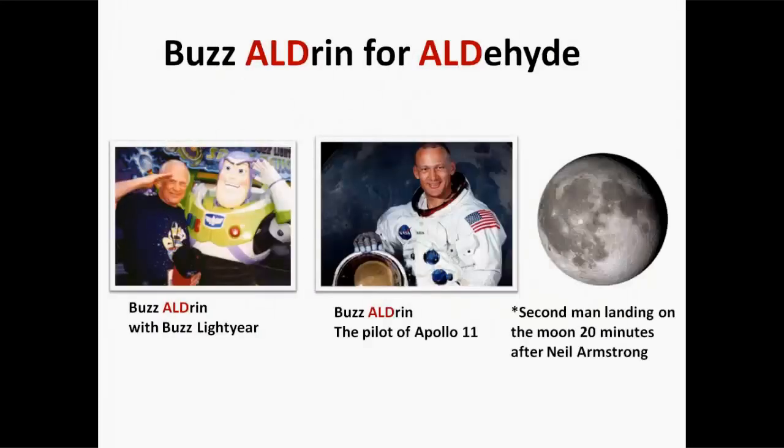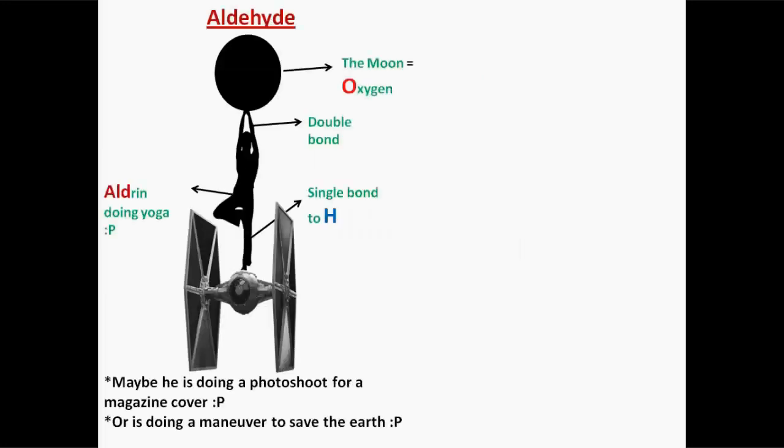As about functional groups, I've chosen the legendary astronaut Buzz Aldrin to represent aldehydes. Let's just imagine that Aldrin is doing the tree yoga pose and he is holding the moon with two hands while standing on a tie fighter from Star Wars. I chose to hide Aldrin's image since it is an aldehyde.